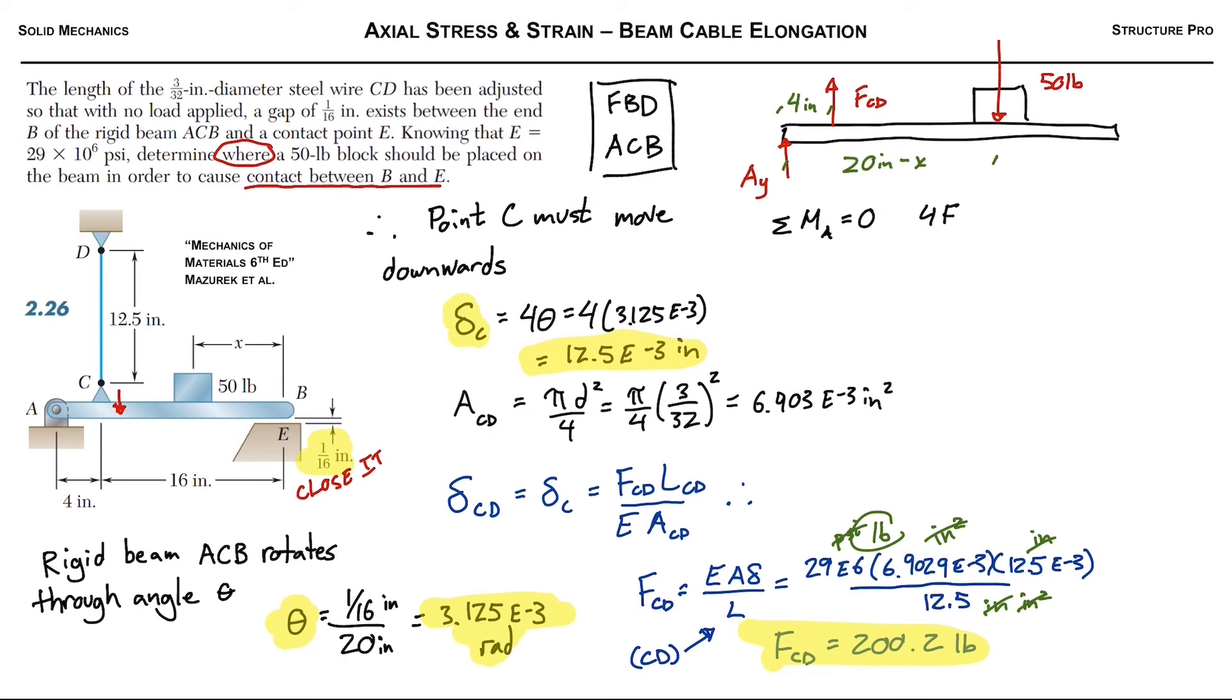Sum of all the moments about A can allow us to solve for X. So we take 4 times FCD and we subtract the 50 times the distance away from A that the 50 acts. So 50 times 20 minus X.